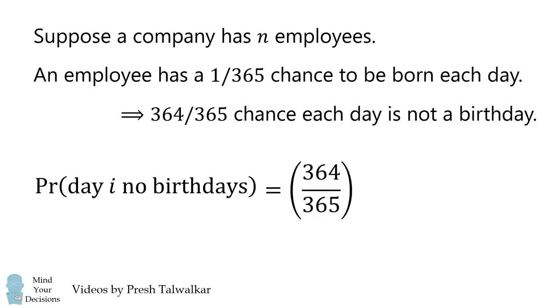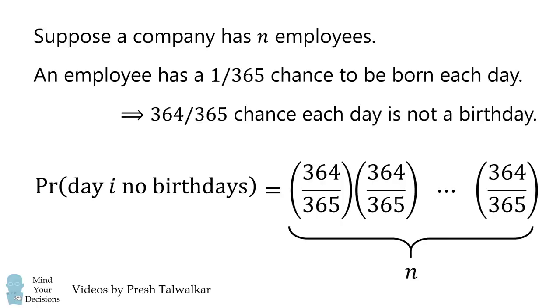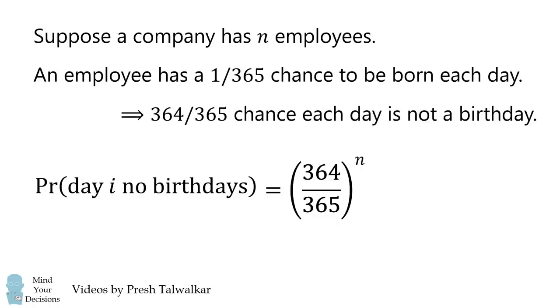This is because each employee's birthday is assumed to be an independent event. We'll group these terms together, and we get 364 over 365 to the power of N.